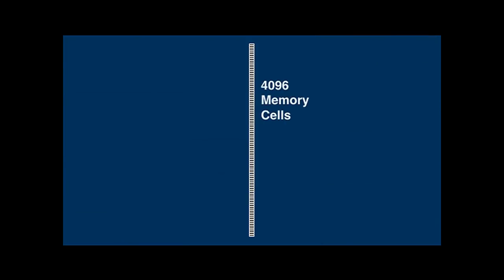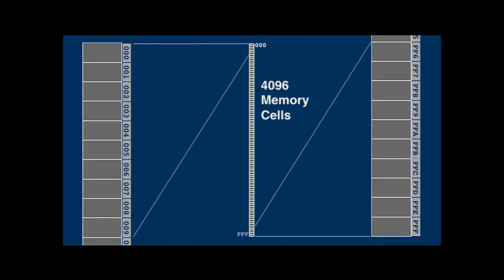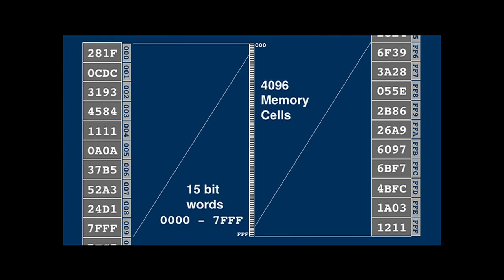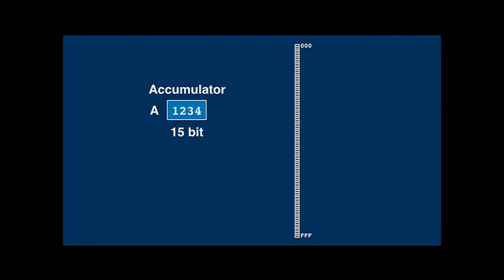The memory model is the cornerstone of the instruction set. Memory consists of 4,096 cells numbered in hexadecimal 000 through FFF. Each cell contains a 15-bit word numbered between zero and 7FFF. Almost all changes in data in memory go through the 15-bit accumulator, also called the A-register. A program can copy words between the accumulator and a memory cell, but also add, subtract, multiply, and divide values as they are moved around. The data in memory can have many meanings depending on how it is interpreted.